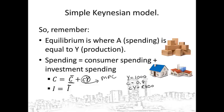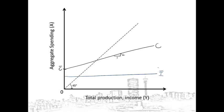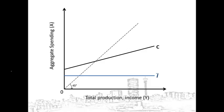Now we can draw the aggregate spending curve. The consumption function will look something like this: autonomous consumption gives the value of the intercept, while the marginal propensity to consume gives the value of the slope of the line. Investment spending will look something like this — as it is entirely autonomous, it will stay the same no matter what the level of income is. Remember, aggregate spending is equal to consumption spending plus investment spending, so to get the total expenditure line, we add the investment line to the consumption line.